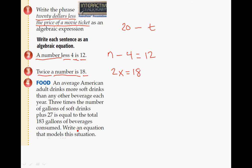An average American adult drinks more soft drinks than any other beverage each year. Three times the number of gallons of soft drinks plus 27 is equal to the total 183 gallons. So let's go back up here. Three times the number of gallons, and let's call it G. Plus 27, is 183. And again, we're just asked to write an equation. You don't have to answer it. So that's all you need to do.